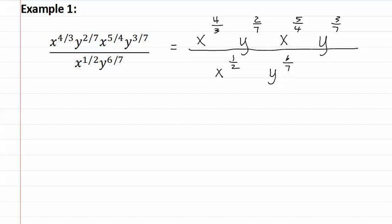Now we can clearly see each term. Let's first look at the x's. We want to make all of the denominators match so it will be easy to add or subtract them. The least common denominator will need to be twelve. The first exponent is multiplied by four, the second by three, and the third by six — giving us new numerators of sixteen-twelfths, fifteen-twelfths, and six-twelfths.